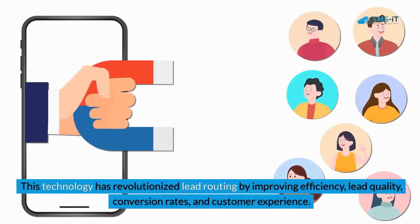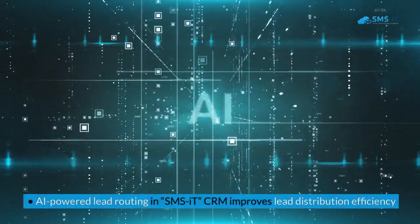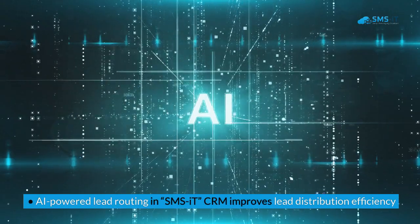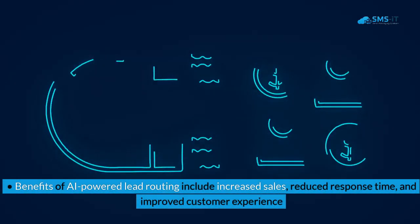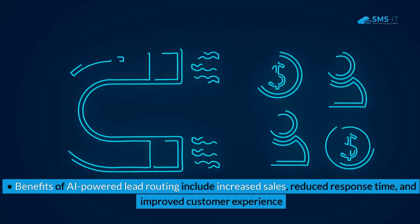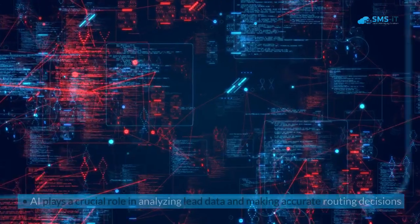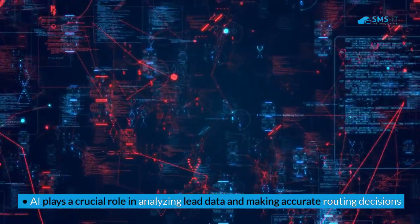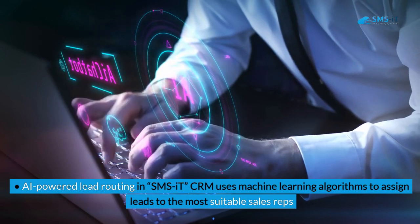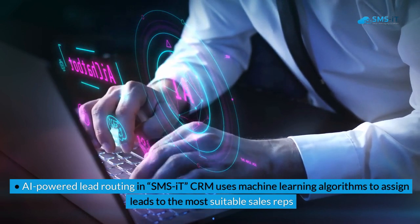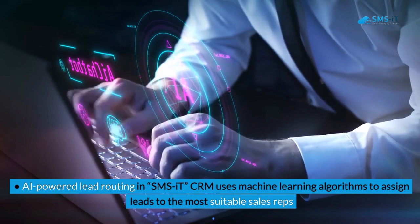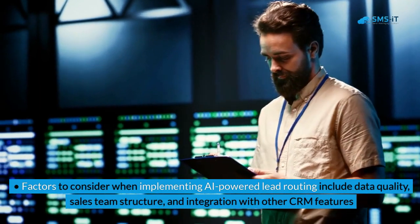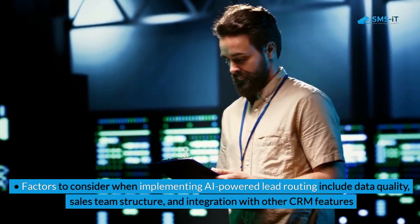Key takeaways: AI-powered lead routing in SMS-iT CRM improves lead distribution efficiency. Benefits include increased sales, reduced response time, and improved customer experience. AI plays a crucial role in analyzing lead data and making accurate routing decisions. AI-powered lead routing uses machine learning algorithms to assign leads to the most suitable sales reps. Factors to consider when implementing it include data quality, sales team structure, and integration with other CRM features.